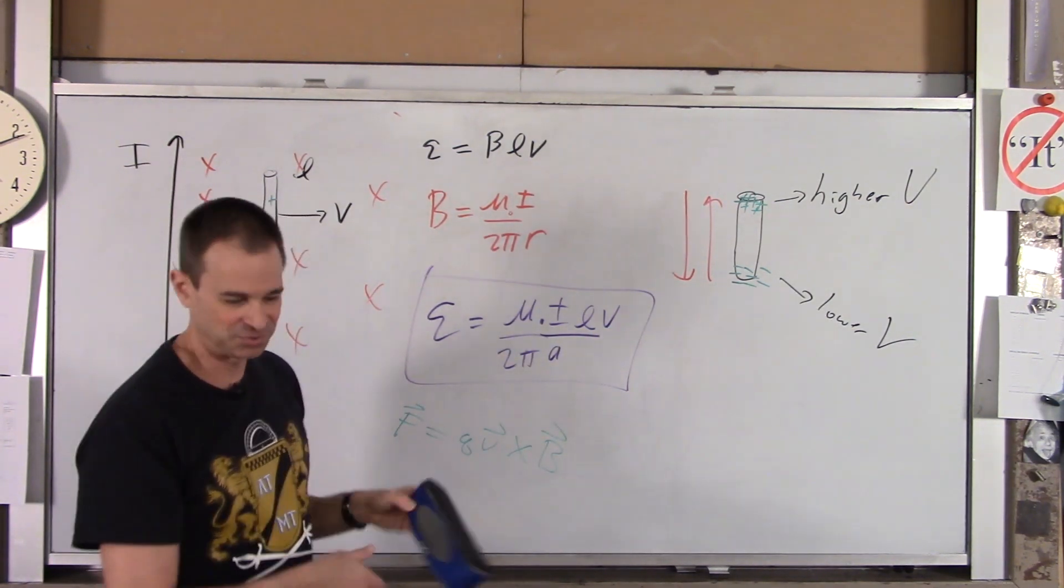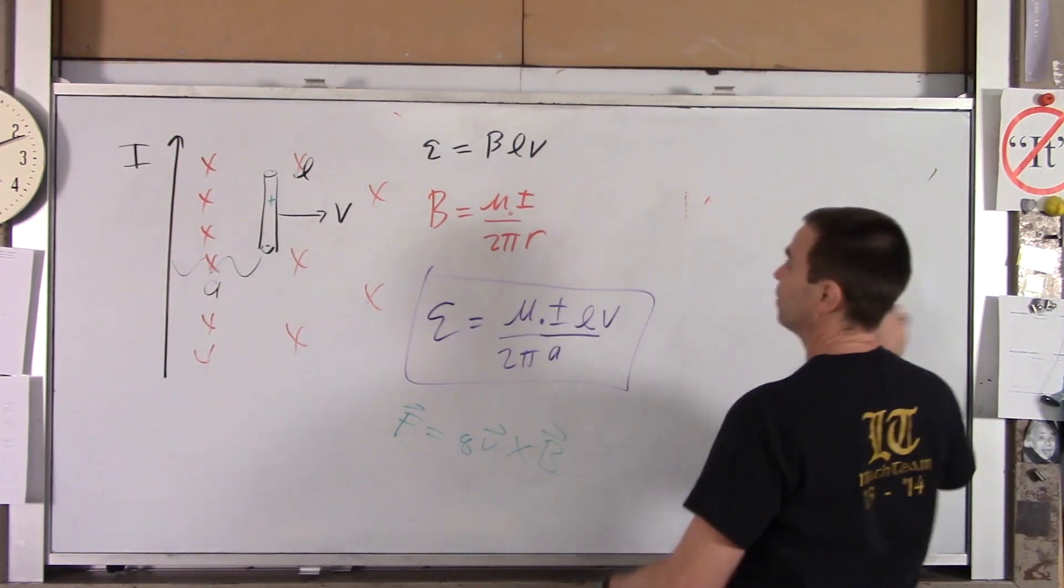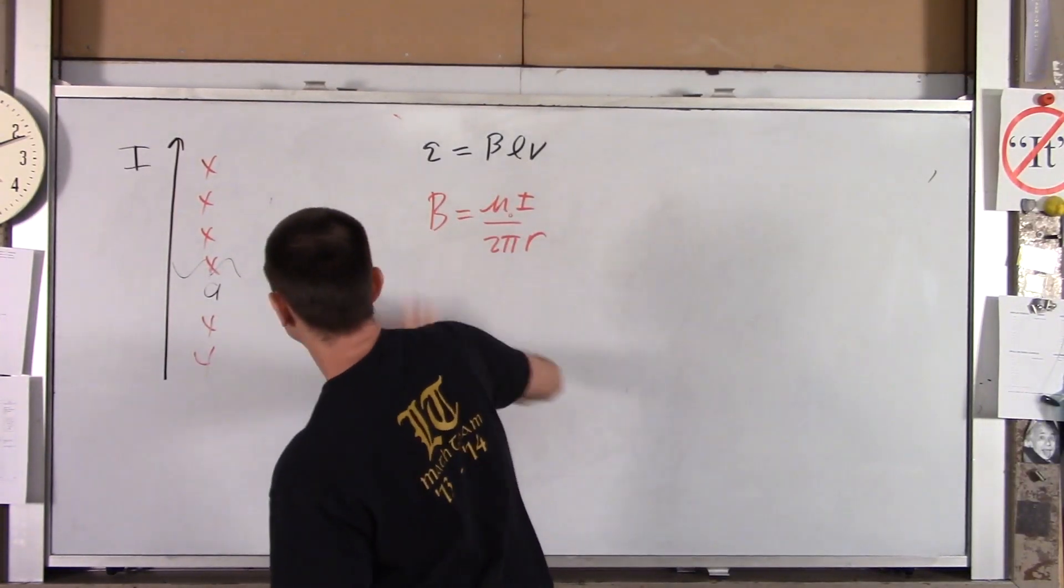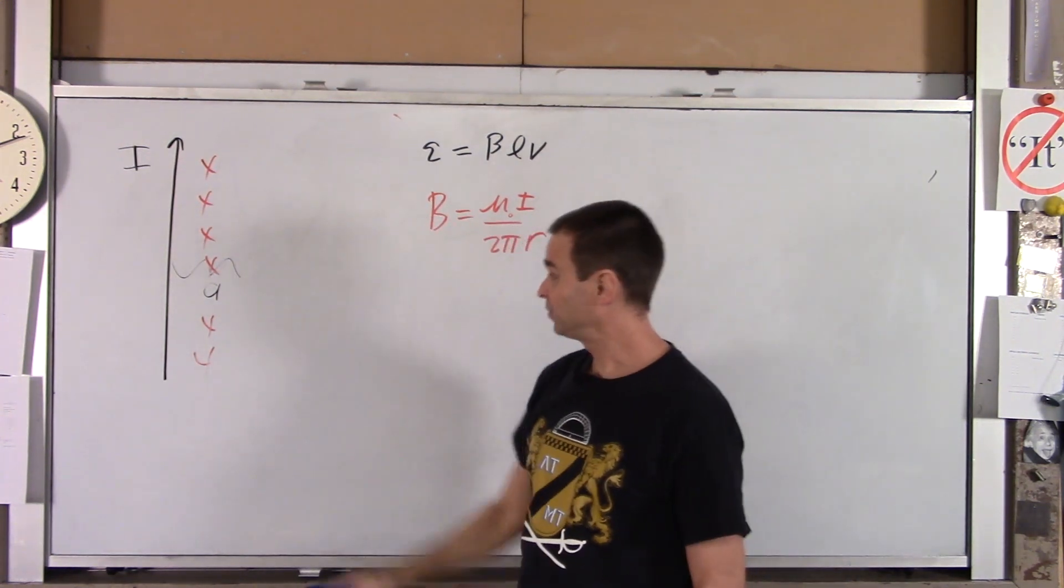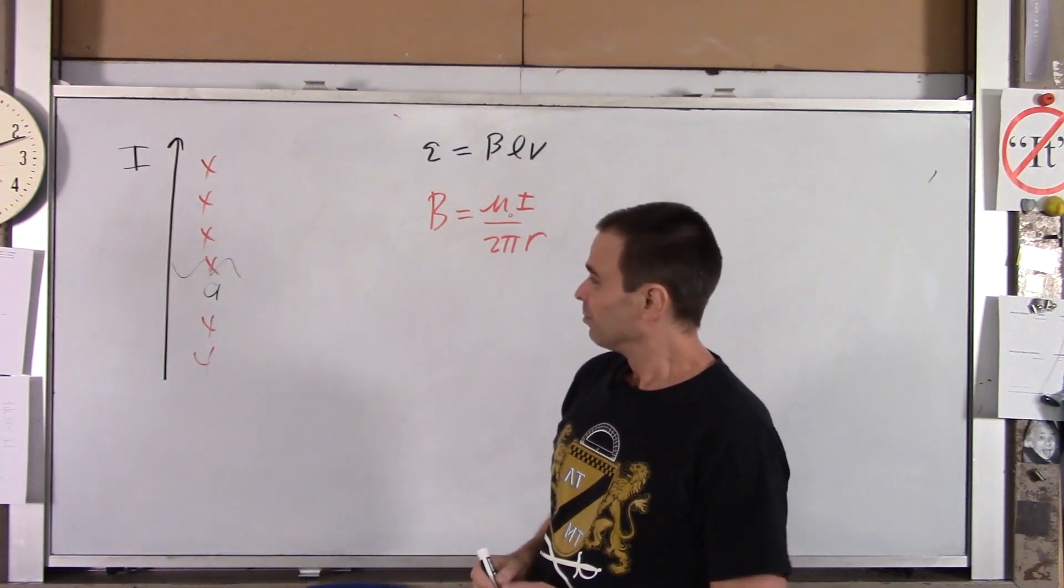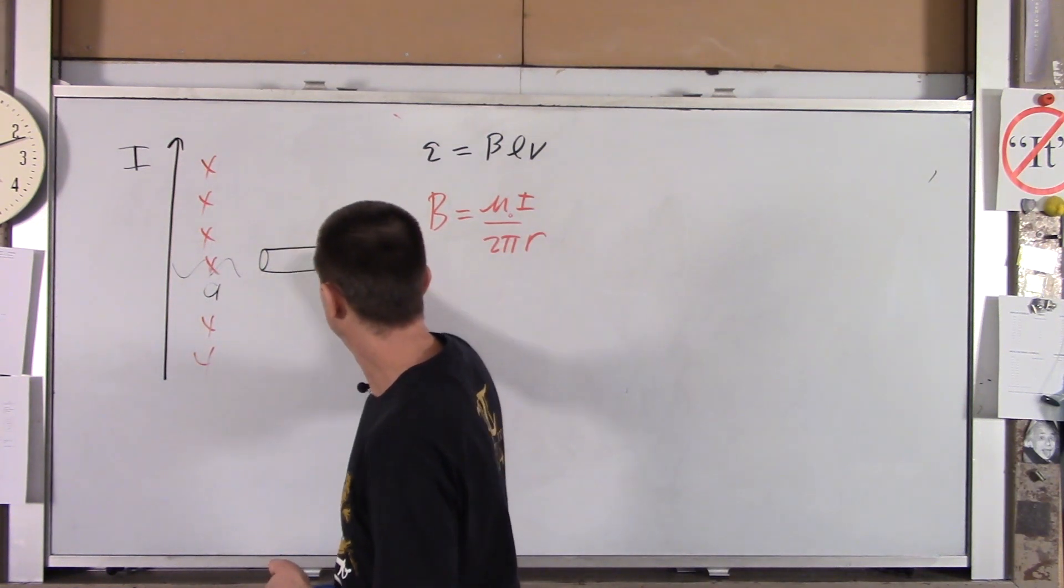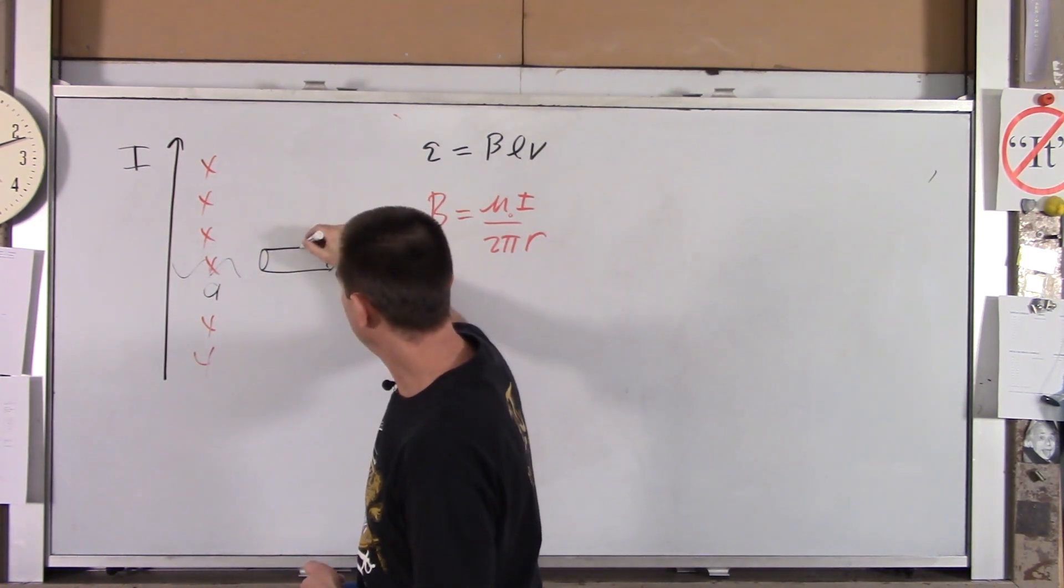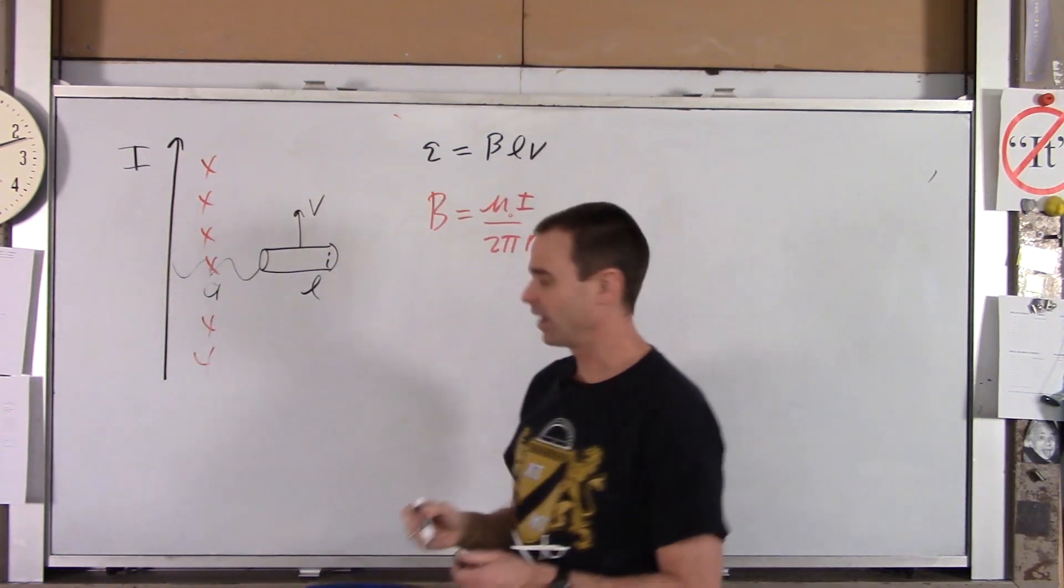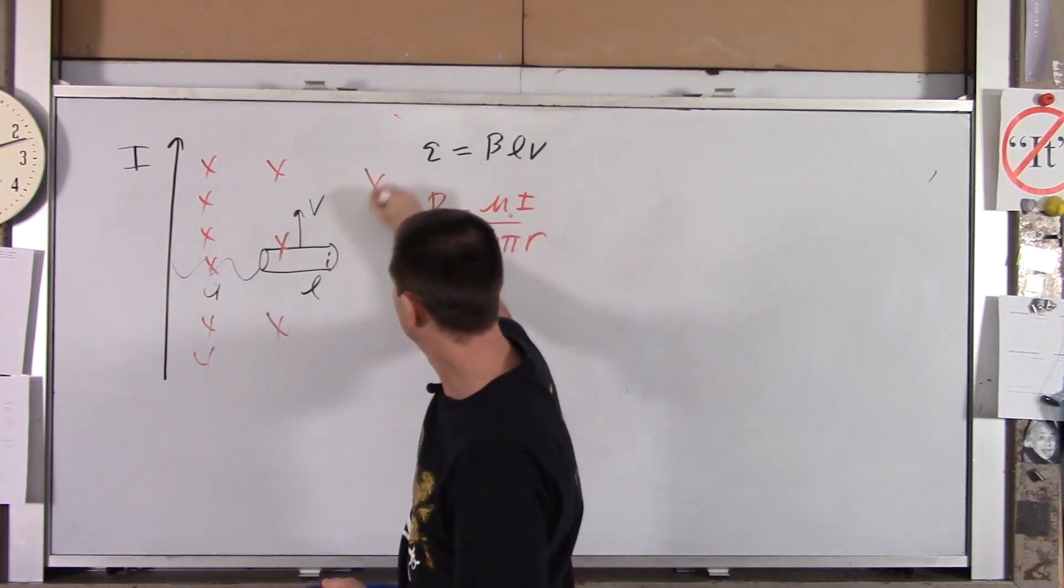Now for part two of this example, we're going to turn this guy 90 degrees and move him in a different direction. So you might want to recopy this in your notes if you need to pause the video. Recopy this part of it. But now we're going to take that little chunk of wire and orient him that way. And we'll have him move up. We'll still call this A and he's still got a length L. And again, I'll kind of fill in that magnetic field we lost here. There and there.